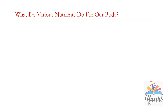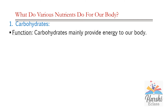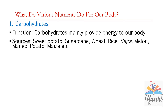What do various nutrients do for our body? First, carbohydrates. The main function of carbohydrates is that they provide energy to our body — carbohydrates give immediate energy. That's why laborers who do physical work need more carbohydrates compared to persons sitting in offices, for example, bankers or software employees. Sources of carbohydrates are sweet potato, sugar cane, wheat, rice, bajra, melon, mango, potato, maize, etc. Most sources of carbohydrates are plant products. These sources are also called energy-giving foods.